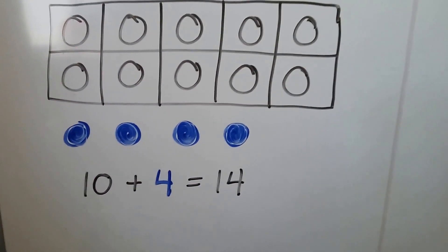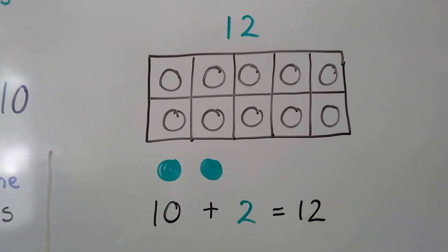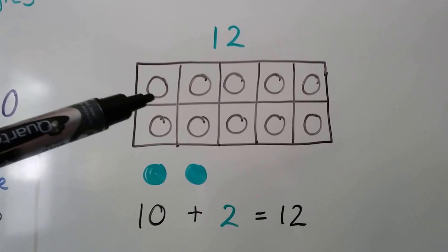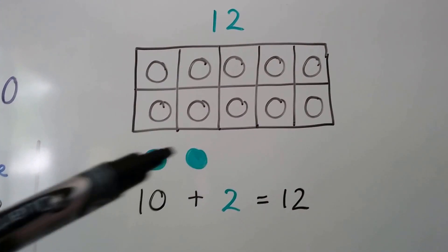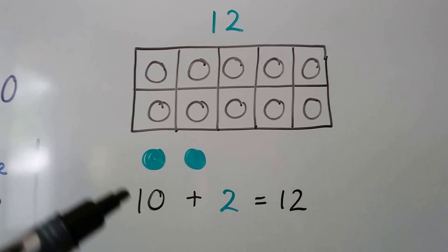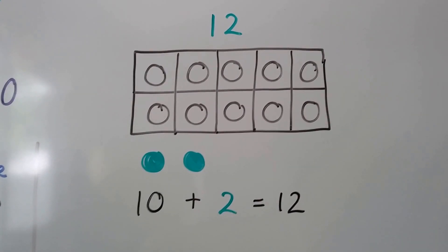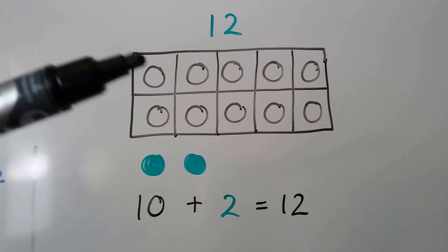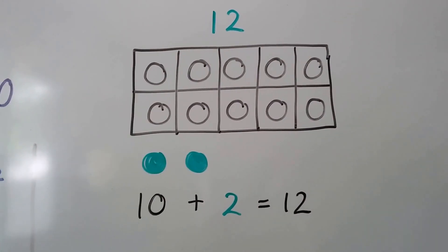If we needed 12, we could use our 10 frame and add two more circles to have 10 plus 2 equals 12. We count on from 10: 10, 11, 12.